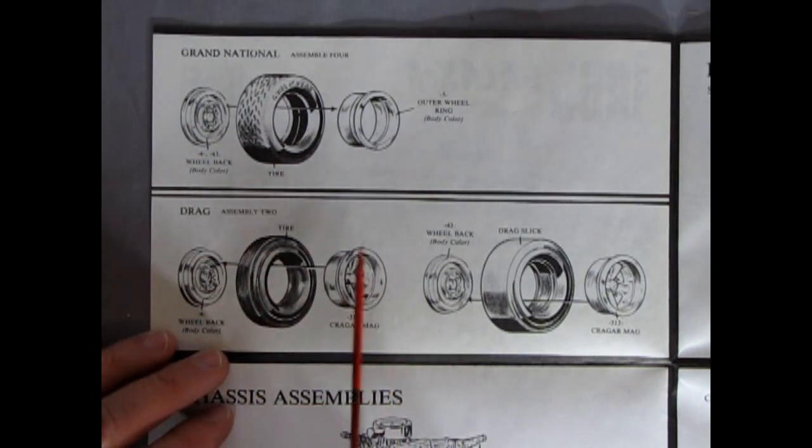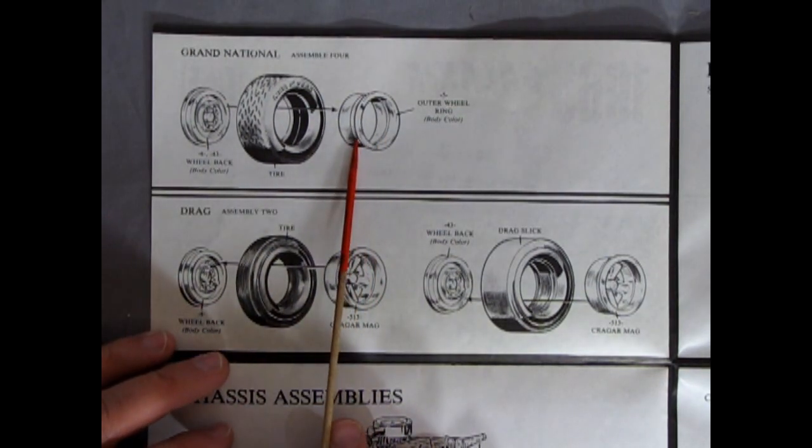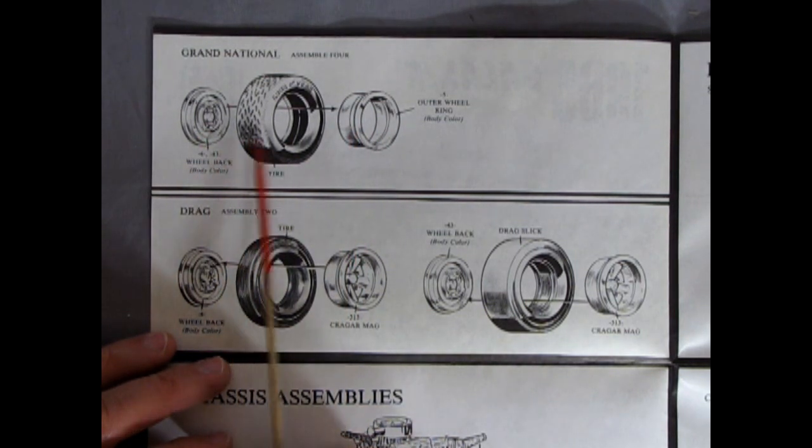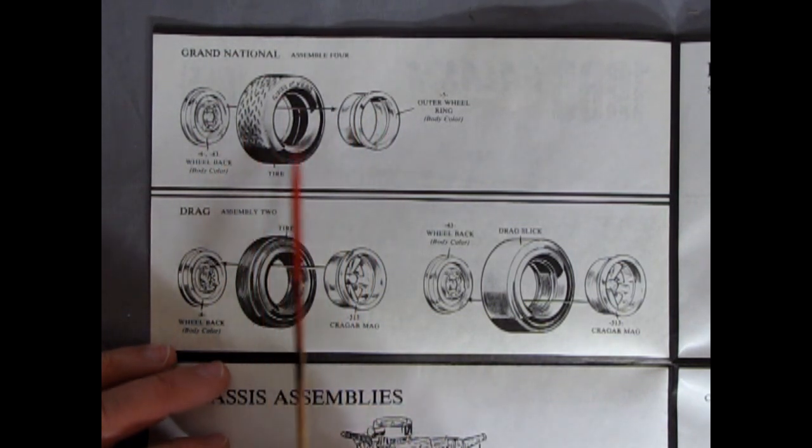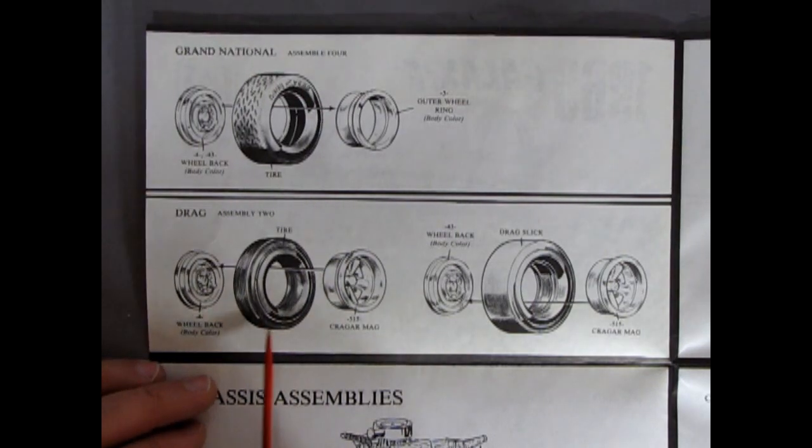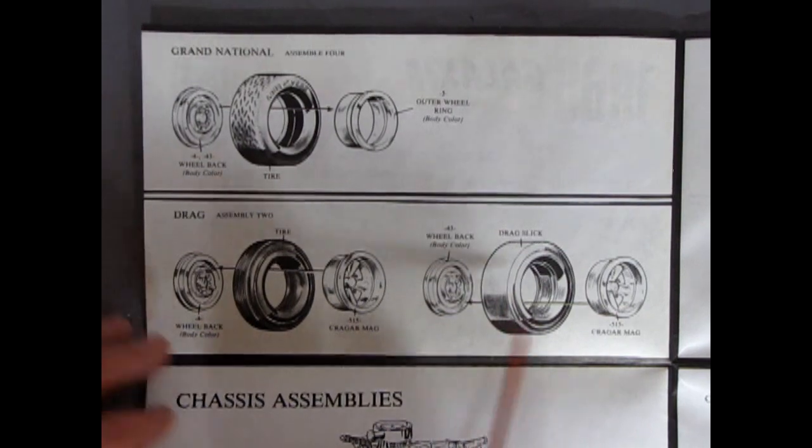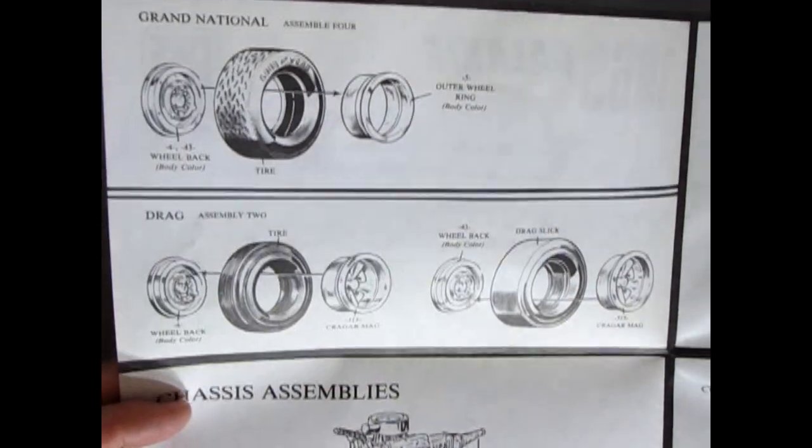Okay, now going into the panel on the back. Like I said, there's the outer wheel ring. This is the extended one. You paint it body color. And your wheel back. And this will give you your NASCAR style wheels. And then, of course, for drag racing, you've got the Kroger Mags. And you're using your drag slick here, which is a Goodyear as well.